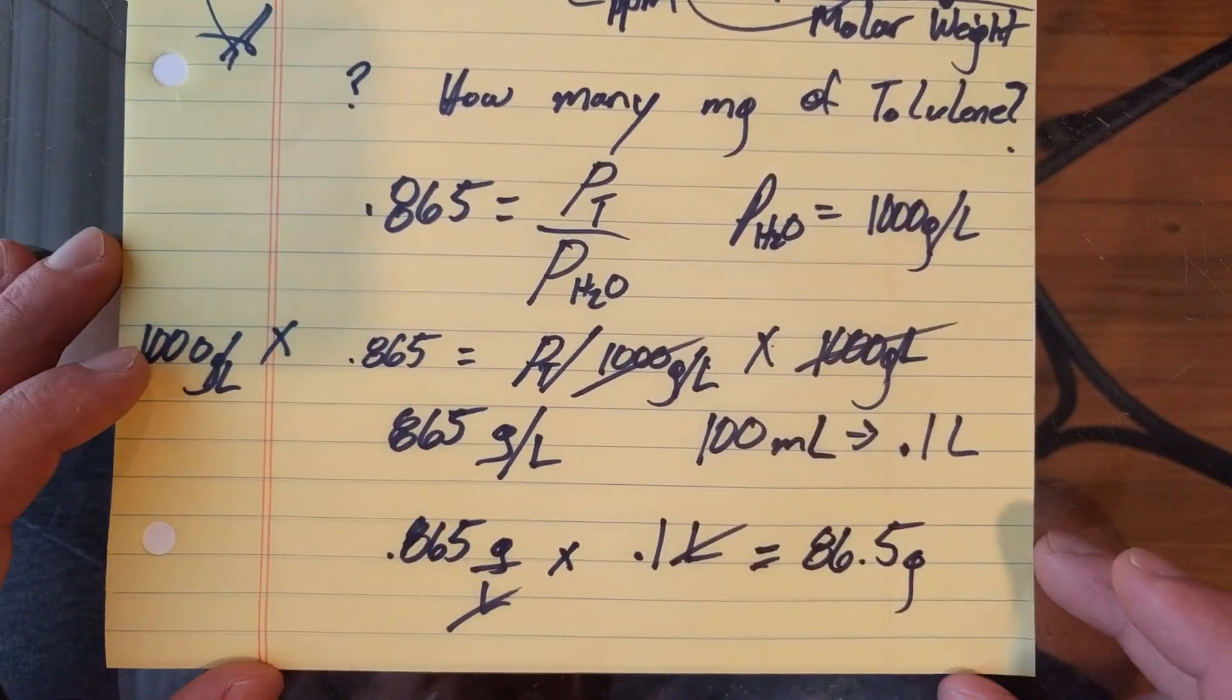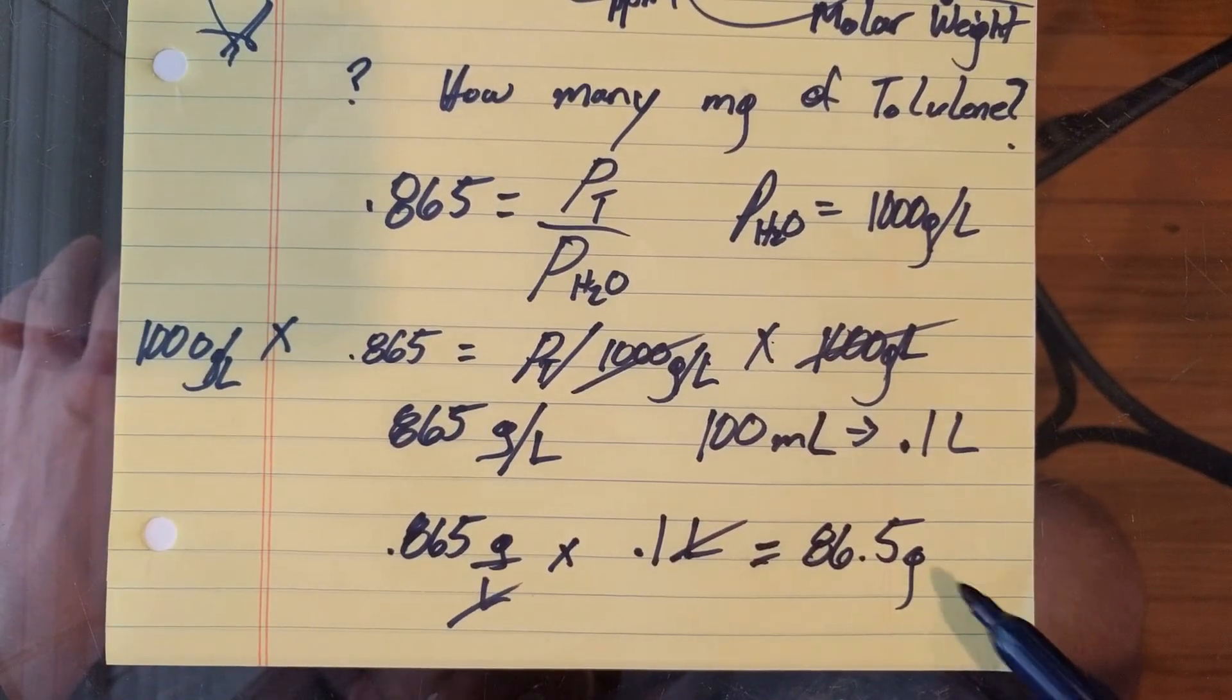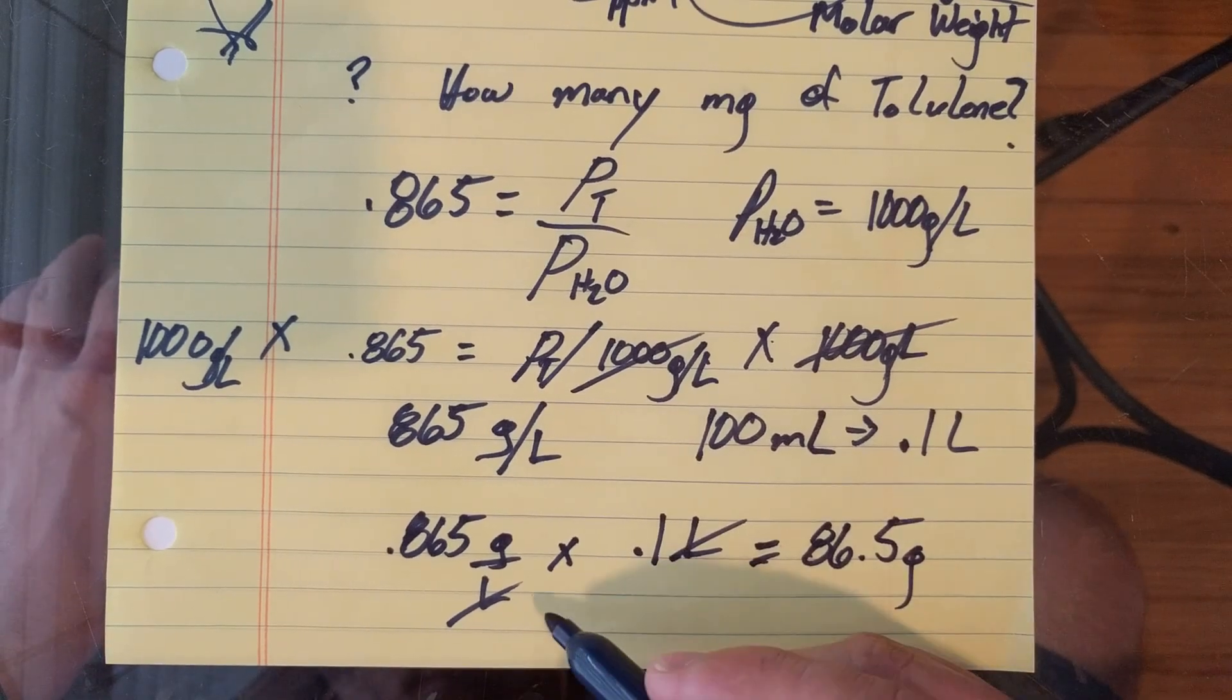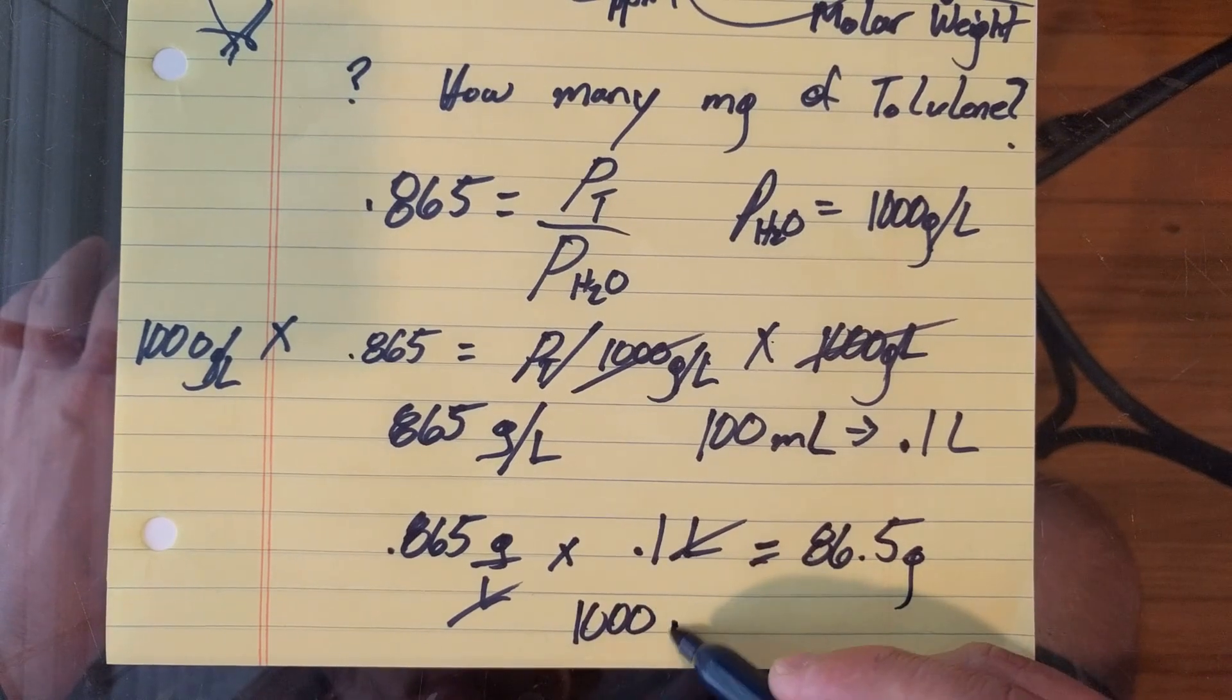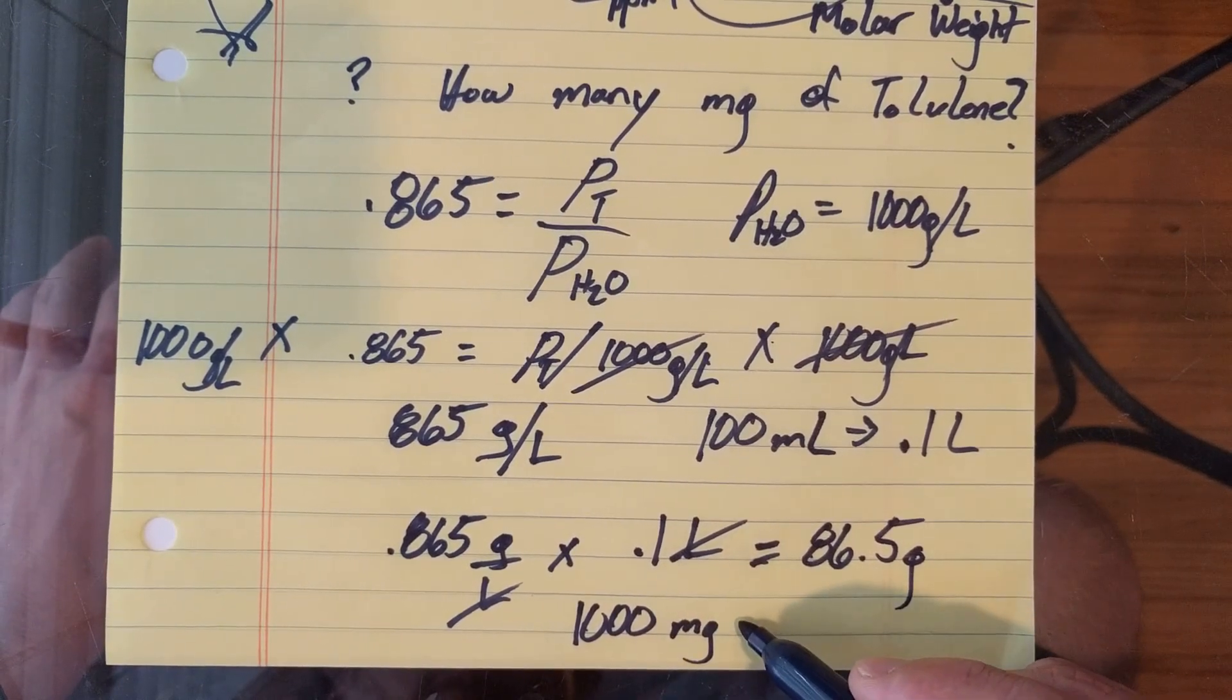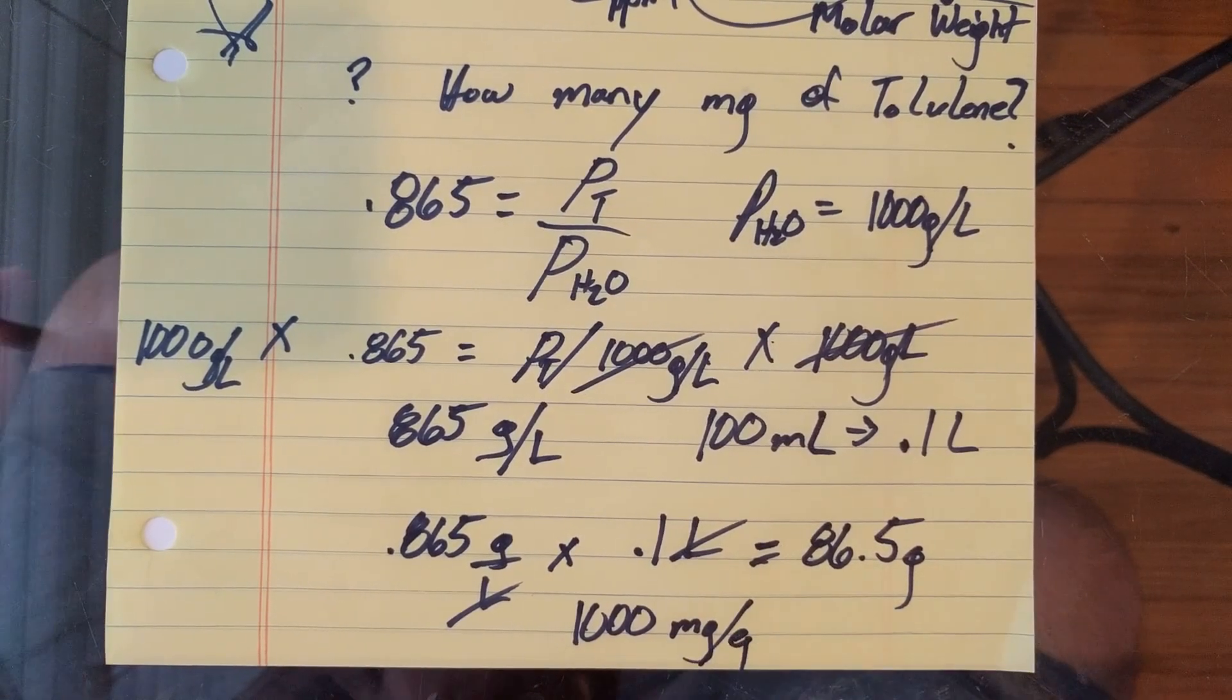Now we want to go to milligrams. How many milligrams are in a gram? There are 1,000 milligrams per gram. So go on to the next page.